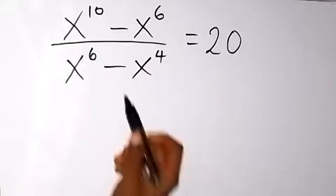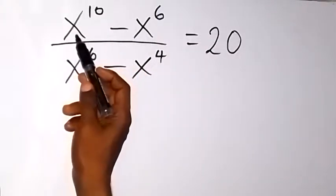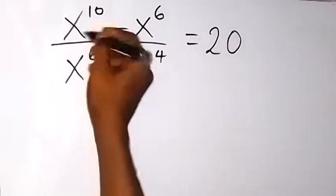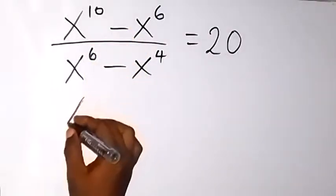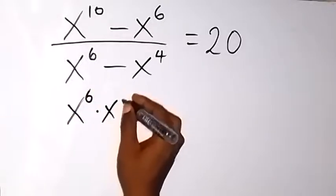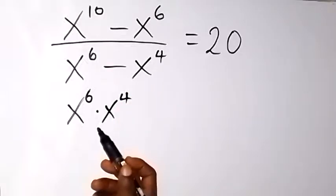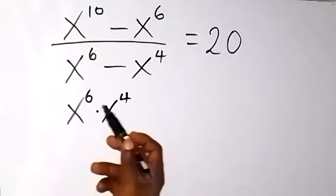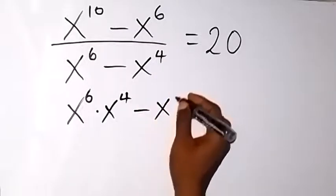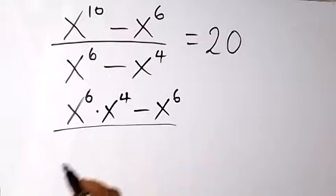Here we can separate x^6 from x^10. Since 10 = 6 + 4, x^10 becomes x^6 multiplied by x^4, because from the law of indices x^6 times x^4 equals x^(6+4) which is x^10. Then minus x^6 in the numerator.